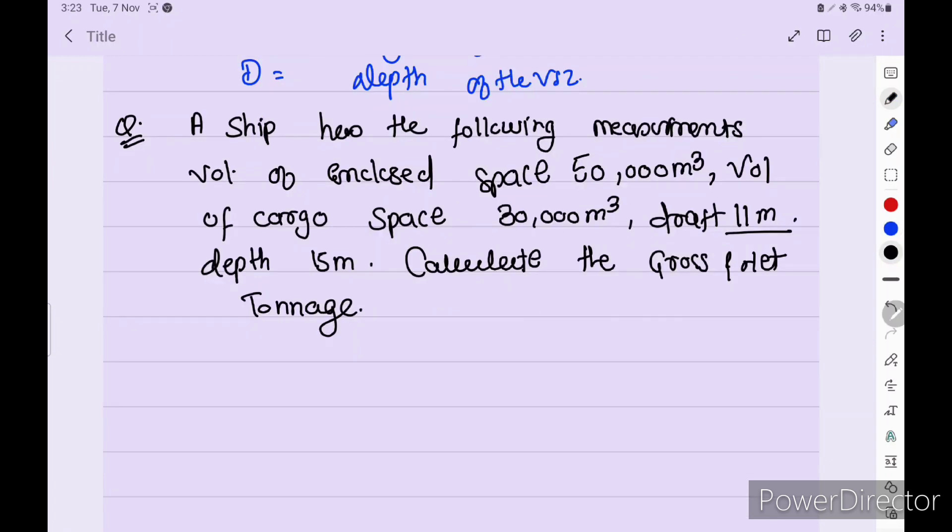This is a question which previously came in the MMD examination. A ship has the following measurements: volume of enclosed space 50,000 meter cube, volume of cargo space 30,000 meter cube, draft 11 meters, depth 15 meters. Calculate the gross tonnage and net tonnage of the vessel.